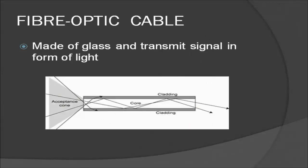A fiber optic cable is made of glass or plastic and transmits signals in the form of light. The glass or plastic core is surrounded by a cladding which is less dense than the core. The difference in density between the core and cladding makes the light beam moving through the core reflect off when it touches the cladding, instead of being refracted.